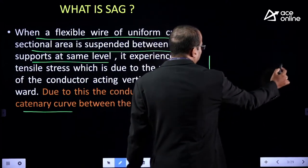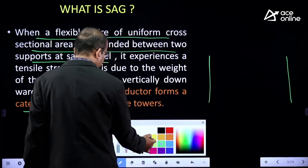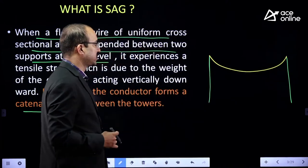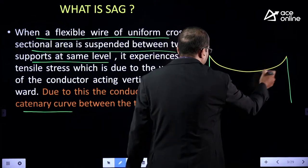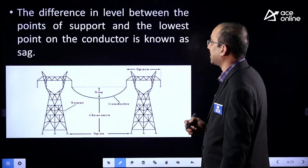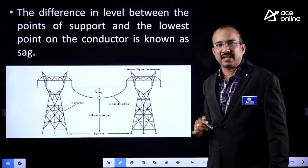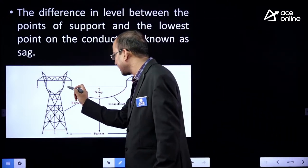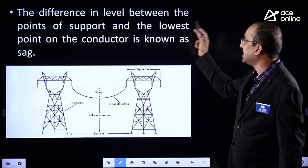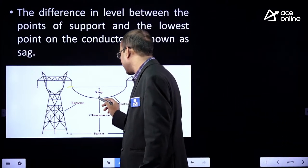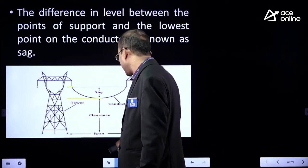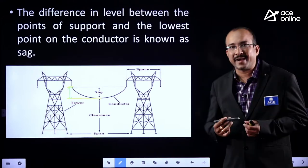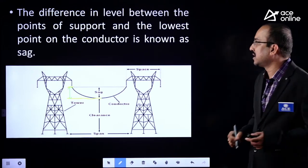Whenever you suspend a wire or a conductor between two supports, it will take a path of a catenary curve. The same condition will prevail in case of a transmission line. The difference in level between the points of support and the lowest point on the conductor is known as SAG.